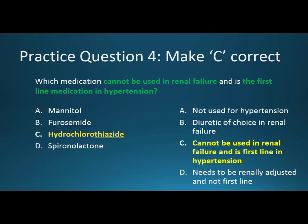Which medication cannot be used in renal failure and is the first-line medication in hypertension? Hydrochlorothiazide makes sense as a thiazide diuretic in hypertension, but why doesn't it make sense in renal failure? When you're talking about renal output and how these diuretics work, if somebody has renal failure, hydrochlorothiazide is just not going to be effective — you're going to have to use something like a loop diuretic because of its different mechanism of action.